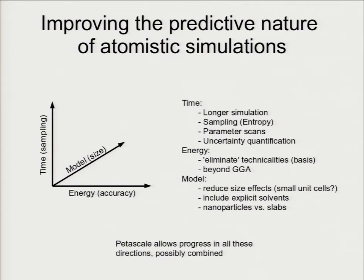The three directions are: improving the resolution in energy — the accuracy of the energy calculation; increasing the amount of time we can sample in Monte Carlo or molecular dynamics, and more broadly in parameter space; and increasing the model size, so we can study greater complexity or realism. I think peta-scale allows us to make progress in these directions, and if you're very brave, maybe in some of them combined.